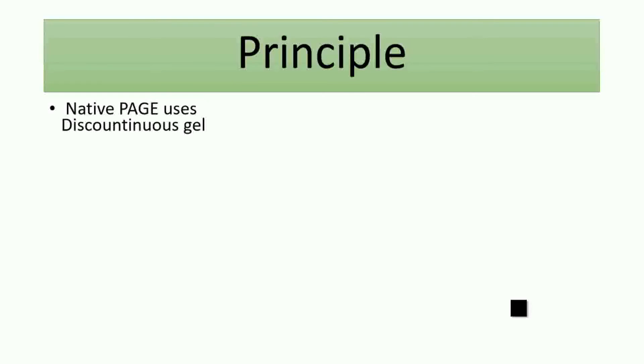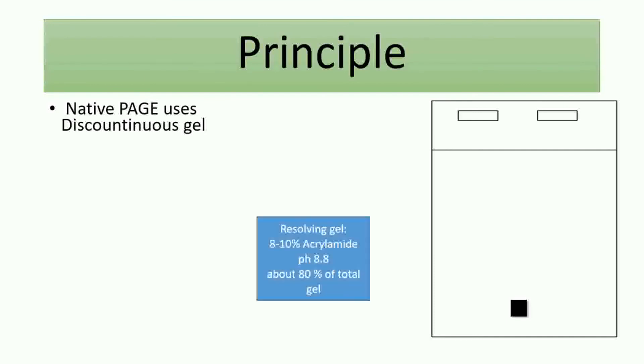Native PAGE uses discontinuous gel, which means we have two phases. One is the resolving gel, which is higher in acrylamide concentration, more alkaline, and occupies the majority of the gel chamber.